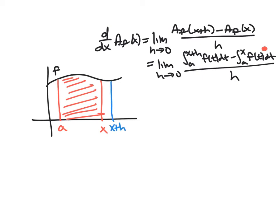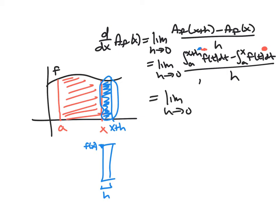When we subtract the red area from the red-plus-blue, we're left with only the blue sliver. The height of that sliver is f(x) and the width is h — it's x+h minus x. We can simplify the numerator: we're really just looking at the definite integral from x to x+h of f(t) dt, all over h. This is just that thin sliver of area.